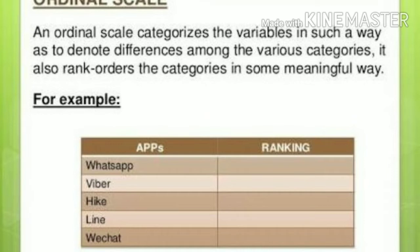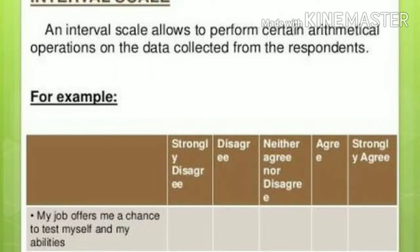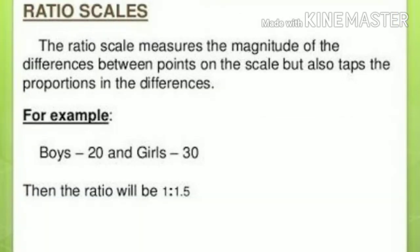Interval scale is used for variables involving quantity which can be categorized, ranked, as well as expressed in increments with non-measurable, consistent, and equal intervals. These types of variables include time, temperature, and percentage of marks scored by students.